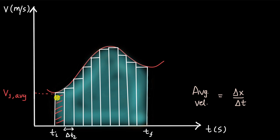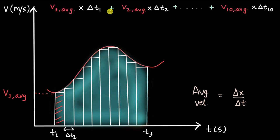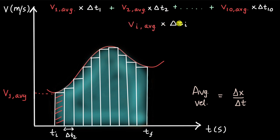The area of this red shaded rectangle is V one average times delta T one, and we can add all of these rectangles. So it looks like: V one average times delta T one, plus ... plus V ten average times delta T ten. We can write this more compactly using a general index I, where I goes from one to ten: the sum (sigma) of V_I average times delta T_I. This is the sum of the areas of all the rectangles.